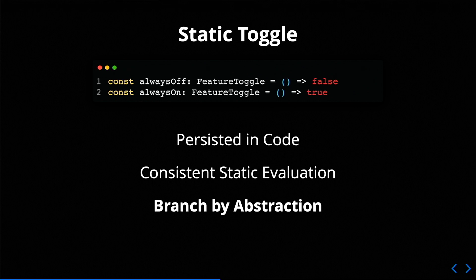I'm going to give this feature toggle a name — I don't think there are commonly used names for a lot of this stuff, so these names are just made up by me. I'm going to call this a static toggle. A static toggle is categorized by being persisted in code — I don't have to ask some database or file for the value. It's just in the code. I get static and very consistent evaluation — it's basically always false, very predictable.